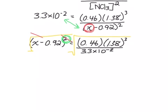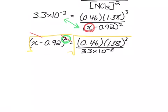And so if we solve here, 0.46 times 1.38 cubed divided by 3.3 times 10 to the negative 2, and the square root of that answer, we get that x minus 0.92 is equal to 6.05. And then there's some other numbers kind of trailing that, so we're not going to round until the end.